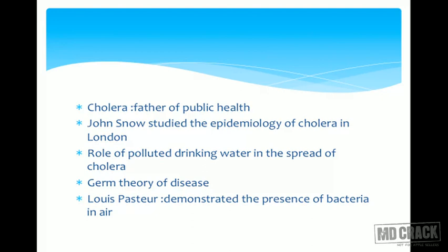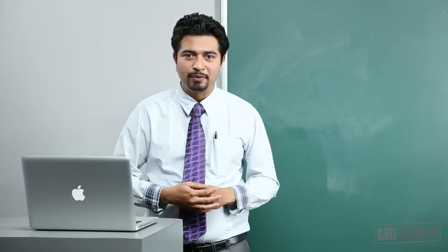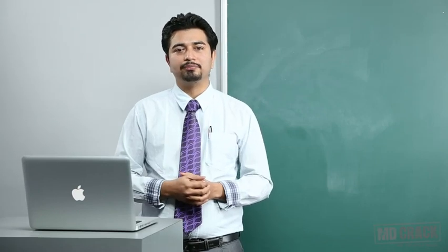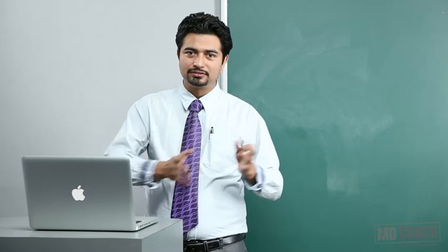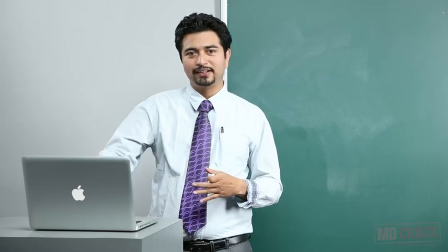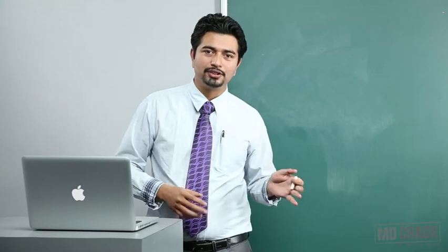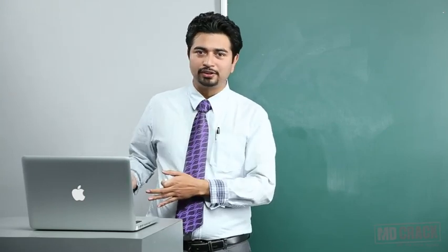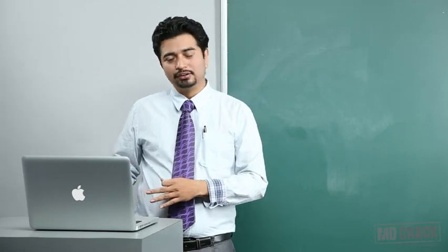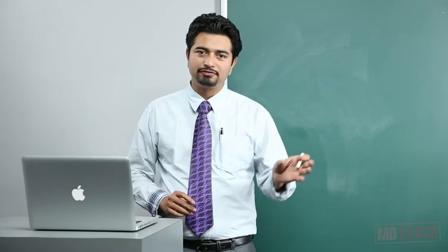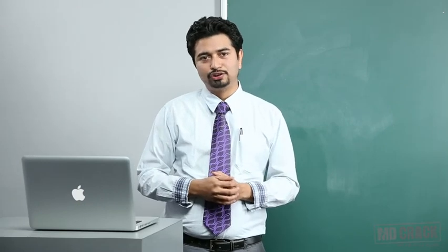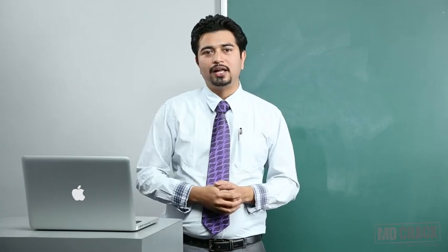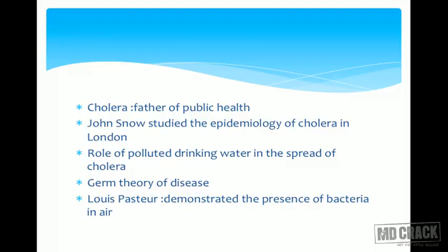Now we move to the germ theory of disease. Because we had a microscope and could see microbiological organisms, we moved into a time called the germ theory of disease — every disease has an agent. For example: tuberculosis has Mycobacterium tuberculosis, leprosy has Mycobacterium leprae, cholera has Vibrio cholerae. That is the cause-effect relationship of germ theory. Louis Pasteur demonstrated the presence of bacteria in air — this is one of the many things he did.